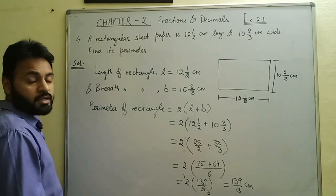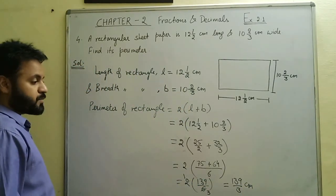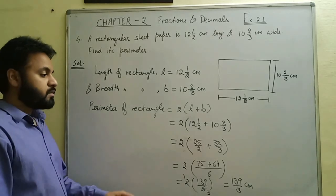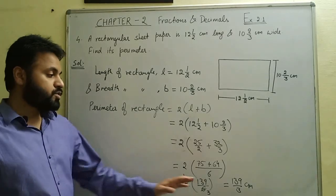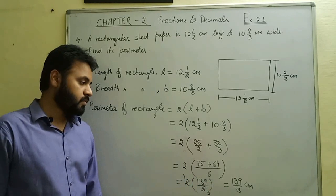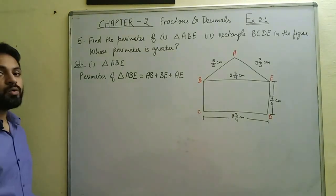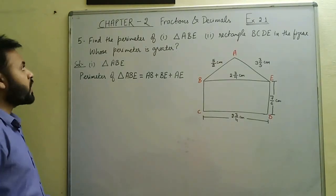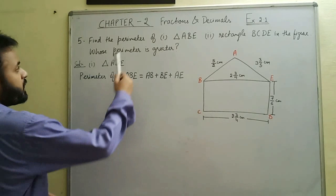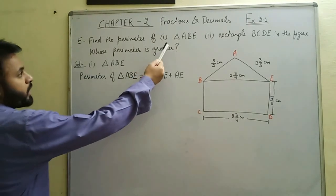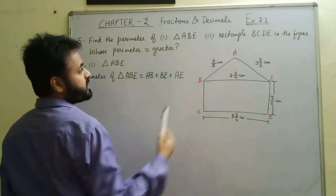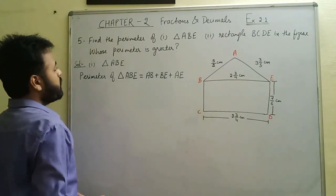We can convert 139/3 into a mixed fraction as per convenience. Now let's look at question number 5 of this exercise, where we have to find the perimeter of triangle ABE and rectangle BCDE from the figure.